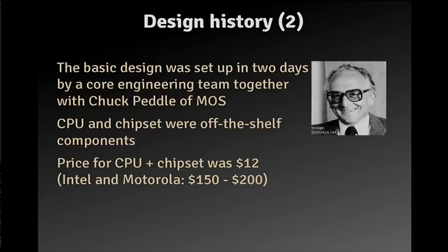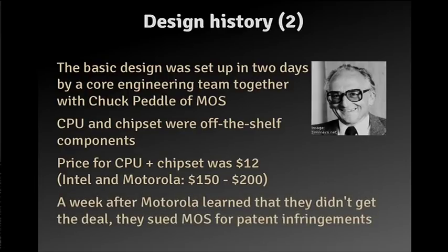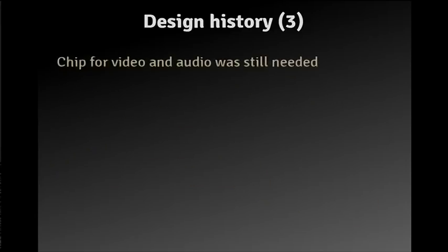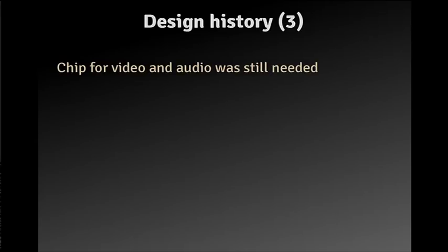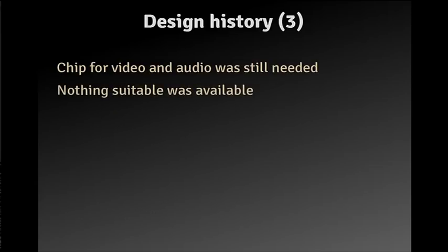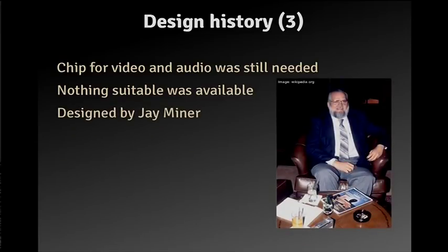The first offer was about $15. Atari brought the price down to $12, whereas the competition wanted $150 to $200. The guys at Motorola were sure they'd get the deal because they were cheaper than Intel and didn't know about MOS. A week after they learned they didn't get it, they sued MOS for patent infringements. What was still needed was a chip responsible for video and audio — there were no off-the-shelf components available, so Jay Miner designed one. Jay Miner is better known as the father of the Amiga.